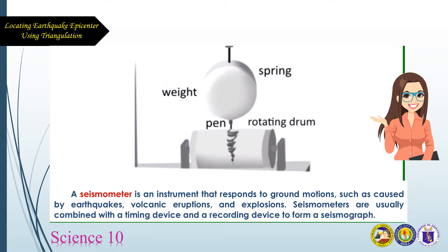A seismometer is an instrument that responds to ground motions such as caused by earthquakes, volcanic eruptions, and explosions. Seismometers are usually combined with a timing device and a recording device to form a seismograph. Now you know!